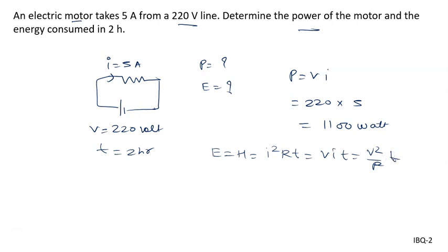Suppose we are applying the formula VIT. V is given to us as 220 volt, current I is given to us as 5 ampere, and the time is given to us as 2 hours. We have to convert into seconds. We know 1 hour equals 3600 seconds, so 2 hours will be 7200 seconds.